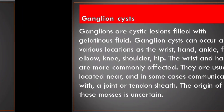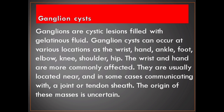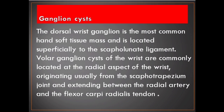Ganglion cysts. Ganglions are cystic lesions filled with gelatinous fluid. They can occur at various locations: the wrist, hand, ankle, foot, elbow, knee, shoulder, and hip — with the wrist and hand more commonly affected. They are usually located near, and in some cases communicating with, a joint or tendon sheath. The dorsal wrist ganglion is the most common hand soft tissue mass, located superficially to the scapholunate ligament. Volar ganglion cysts of the wrist are commonly located at the radial aspect, originating usually from the scaphotrapezium joint and extending between the radial artery and the flexor carpi radialis tendon.